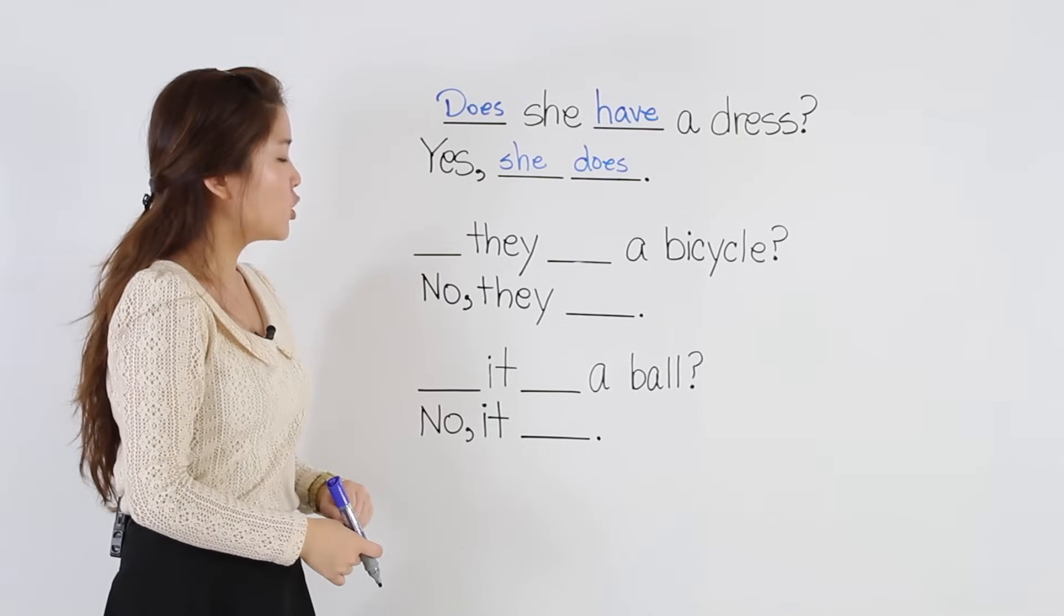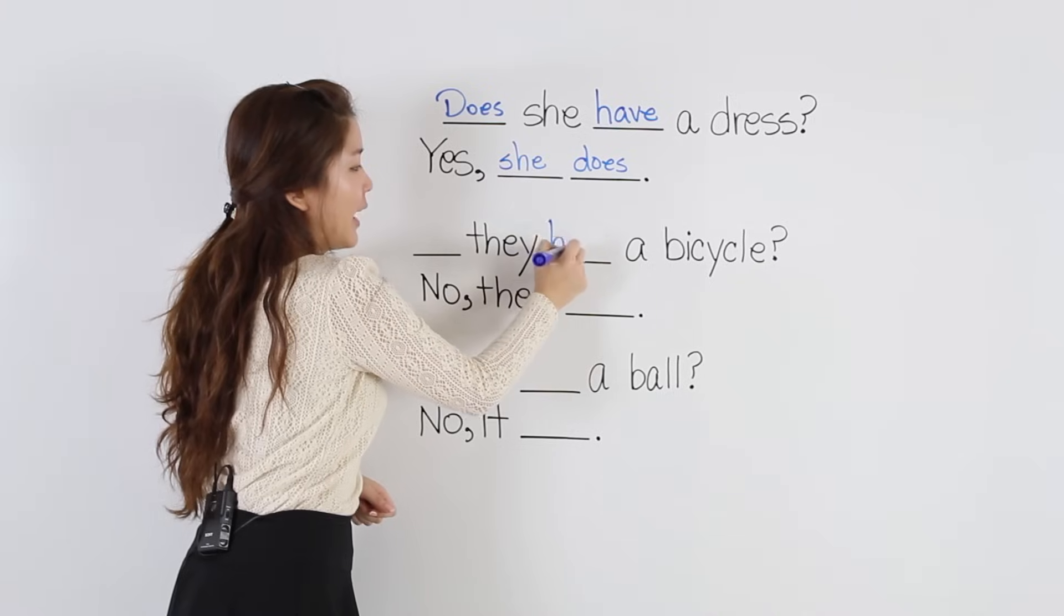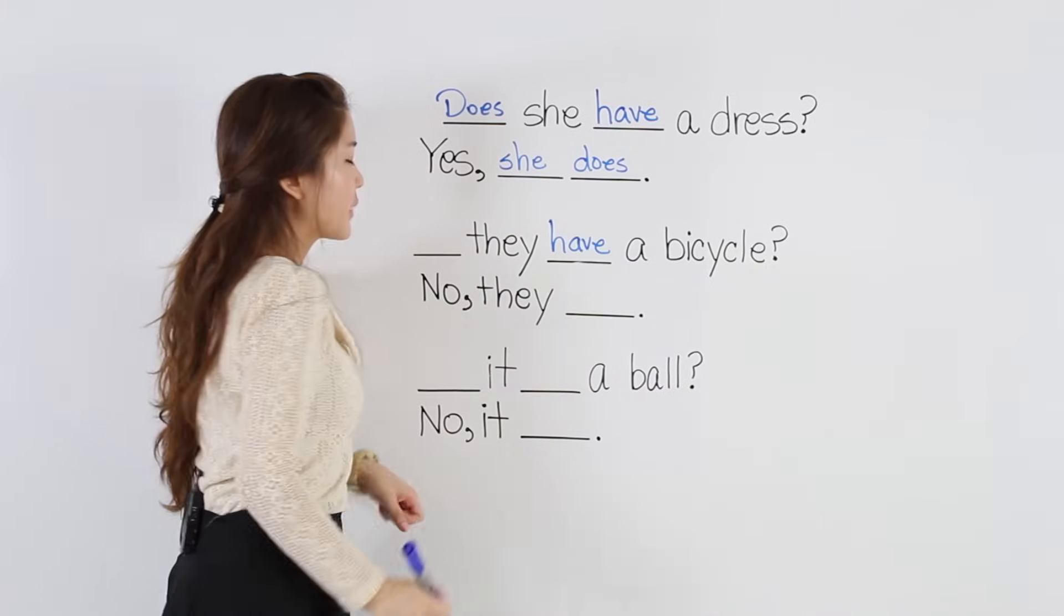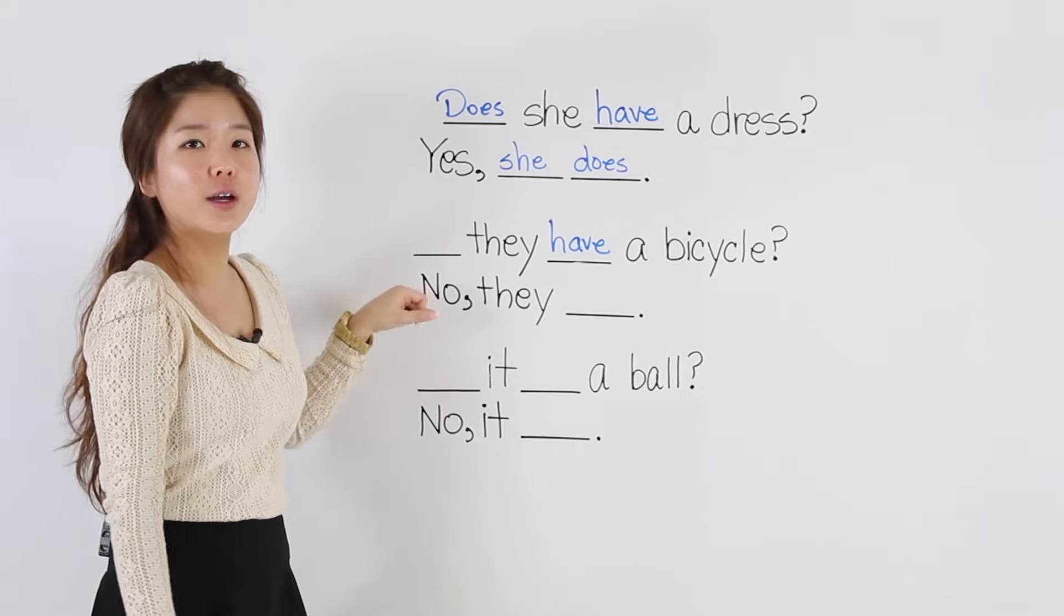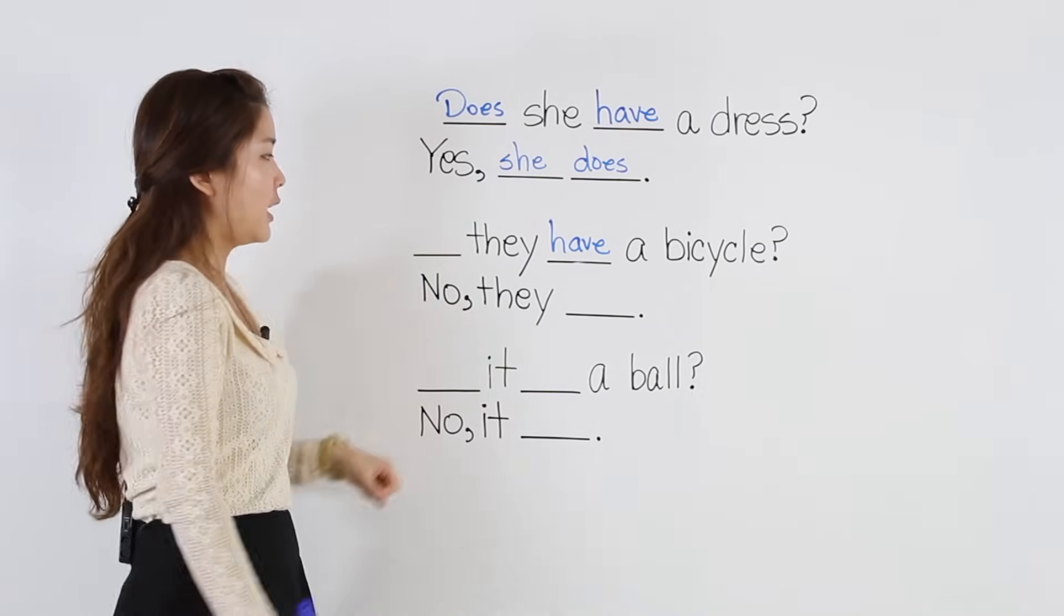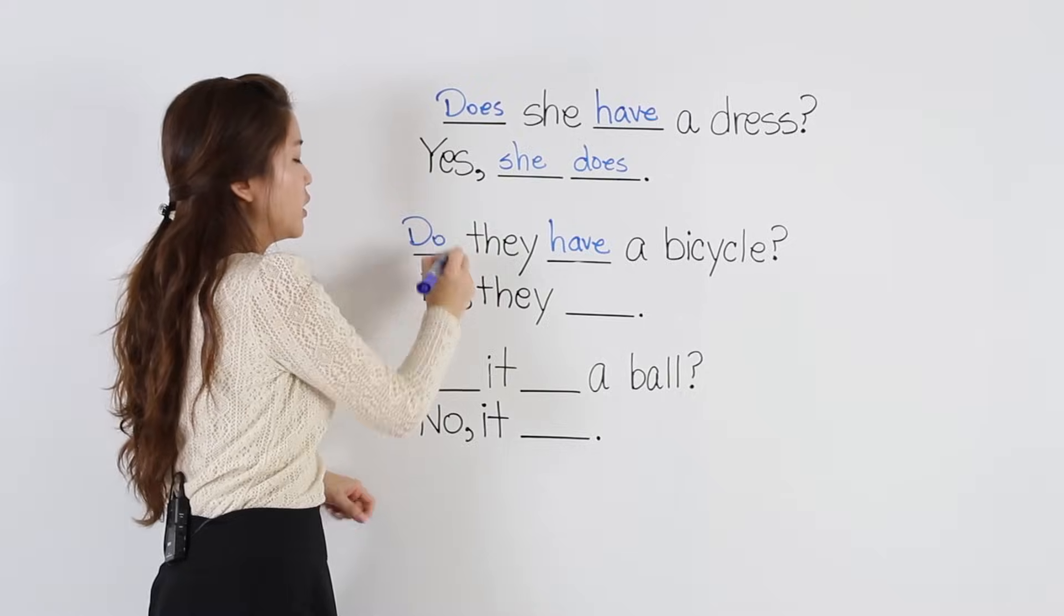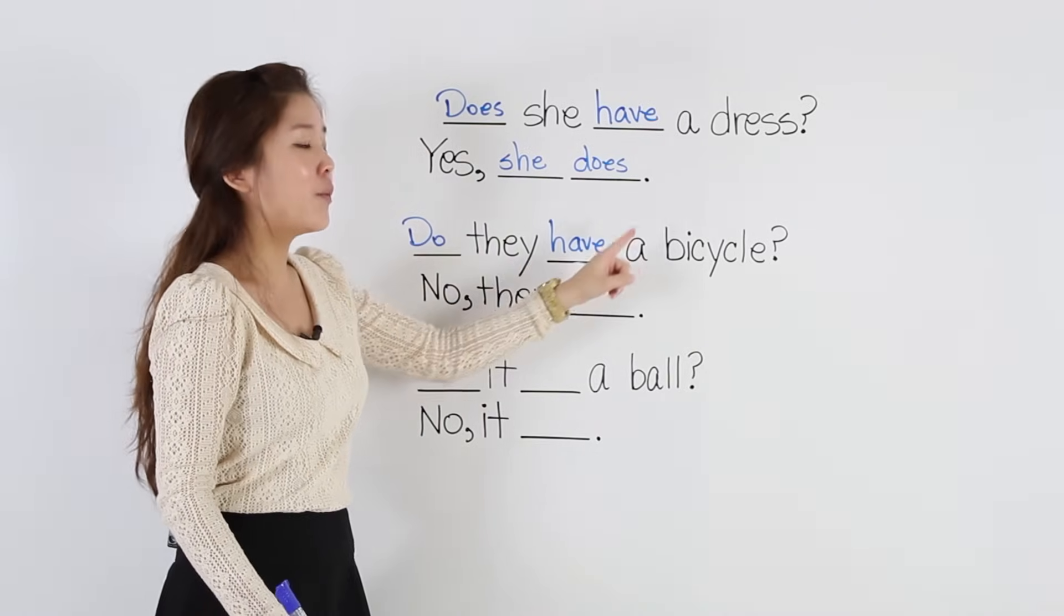The next one, we have they. Okay, have is again the same. Have a bicycle. Okay, what goes in the front? For they, we use do. Do they have a bicycle?